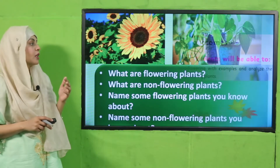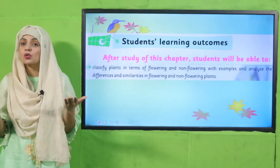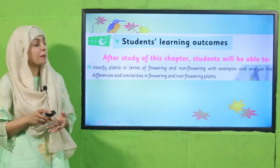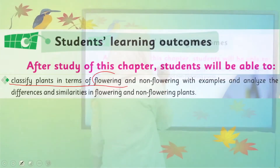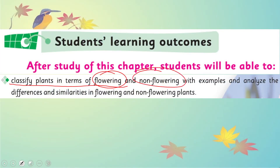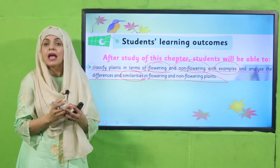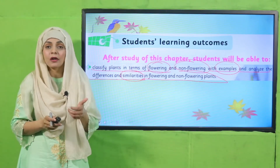Now let's move forward towards today's student learning outcome. By the end of today's lecture, all students will be able to classify plants in terms of flowering and non-flowering with examples, and you will also be able to analyze the differences and similarities. Today we will discuss only the similarities in flowering and non-flowering plants — first their classification, then examples, and then similarities.